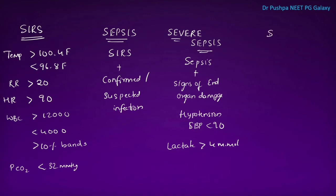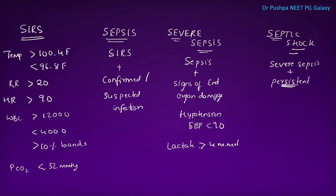What is septic shock? Septic shock includes severe sepsis plus there are persistent signs of end organ damage and persistent hypotension, and persistent high levels of lactate. These symptoms are persistent — that is, persistent signs of end organ damage, persistent low BP, and high lactate levels.